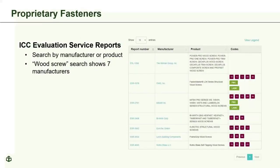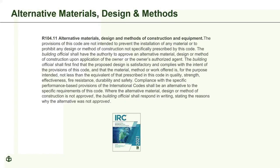The ICC-ES website is user-friendly for finding evaluation service reports — you can search by product, manufacturer, or general material. For example, searching for 'wood screw' shows that seven different manufacturers have ESR reports for wood screws. When dealing with anything not found in the code, IRC section R104.11 — Alternative Materials, Design and Methods of Construction — can always come into play. The designer would need to provide an evaluation service report or other test reports, and the building official always has final approval.